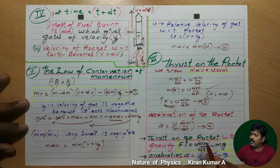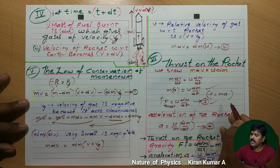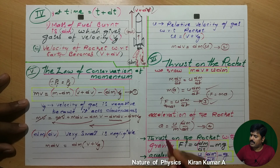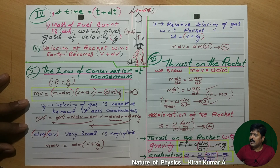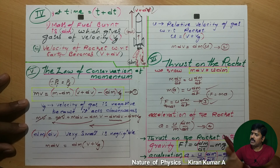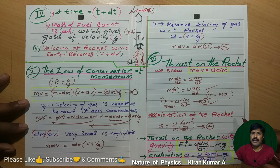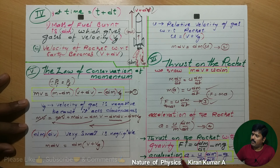Along with thrust, we also consider gravity. Adding the gravitational term: F = u·(dm/dt) − mg — equation 5. And acceleration: a = (u/m)·(dm/dt) − g — equation 6. Equations 3 and 4 give thrust and acceleration without gravity; equations 5 and 6 include gravity.